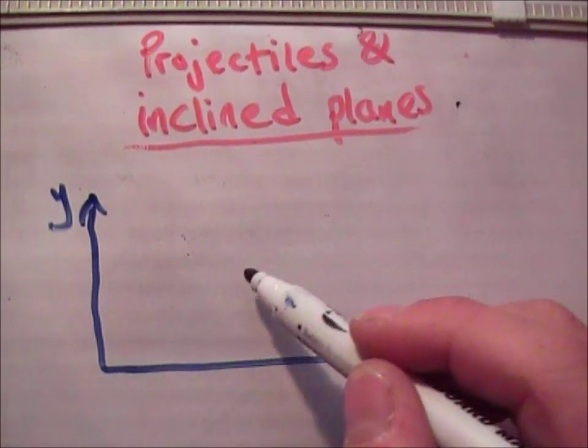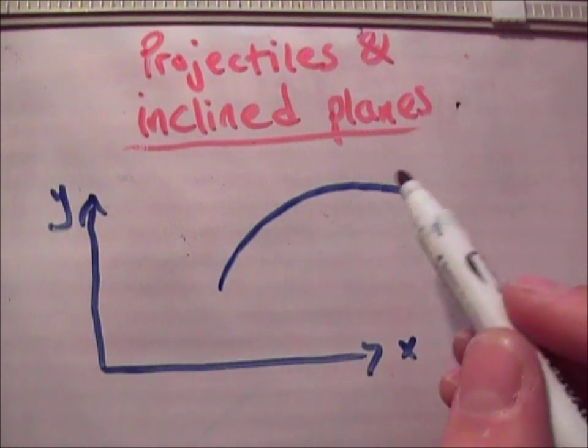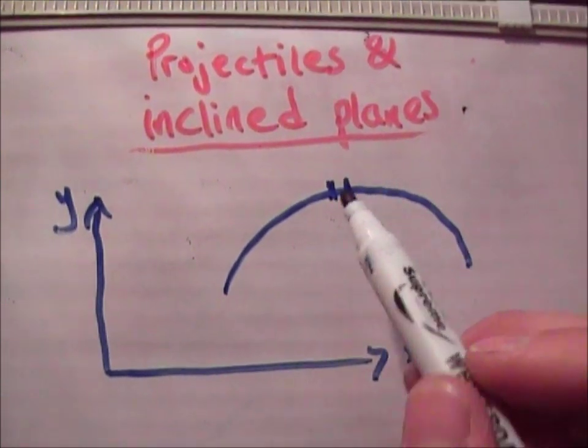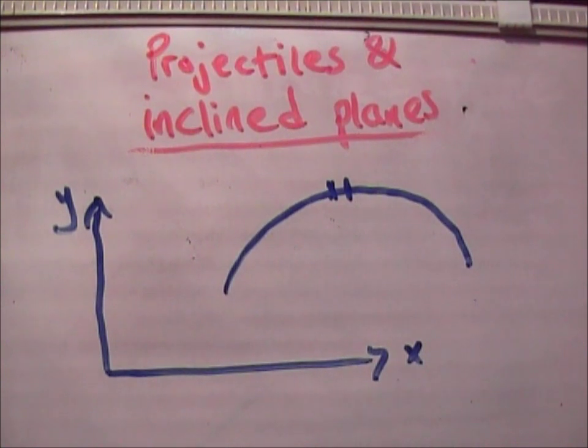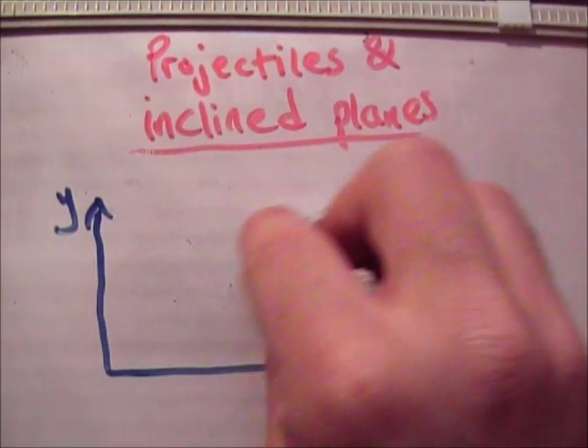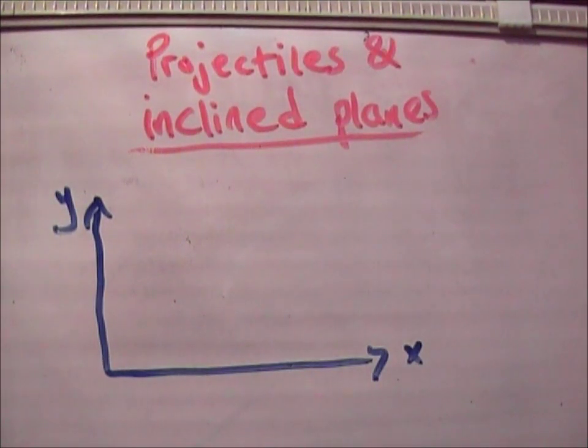Now remember the Earth of course is curved over thousands of miles. However if you look at it over a short period of 100 meters it looks pretty much flat. So we can model the Earth as being flat locally. And we will say the x-axis is the locally flat Earth.